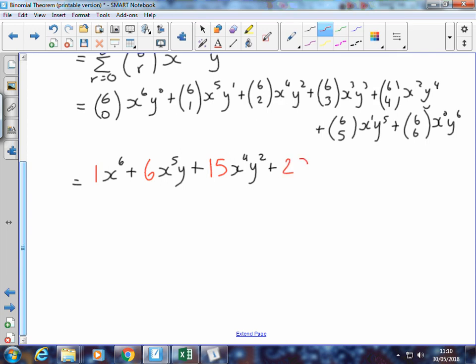And we've got 20, x to the 3, y to the 3, plus 15, x to the 4, plus, where are we then? We're at 6 choose 5, which we're back to 6, and then back to 1. And we've only got the y to the power 6. Okay. So here we've got our simplified expression.